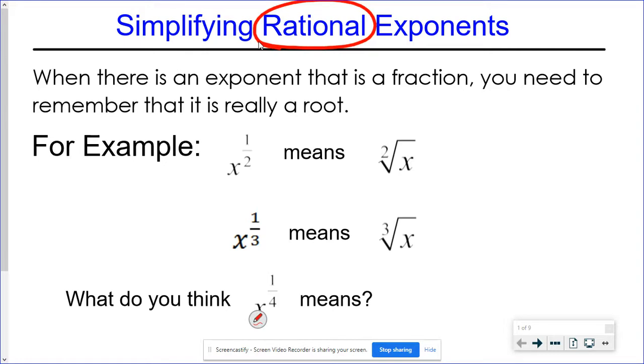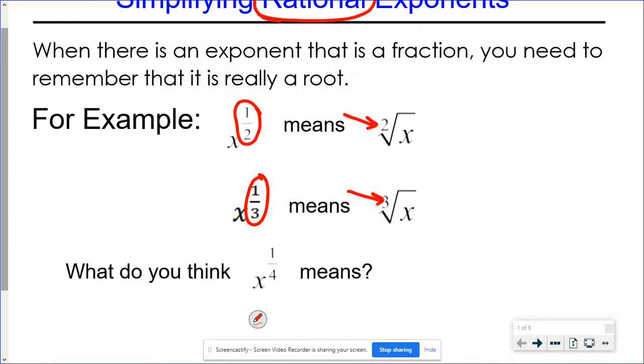For instance, in the first one, I've got x to the one-half power. This one-half power really means that I've got a square root. Typically, we don't see that two in that index spot, but you can. If you're using a calculator on the phone, for instance, when you turn it sideways, you have a scientific calculator. Usually you have that two there. So if I have x to the one-third power, that really means that it's a cube root. So then what would you think x to the one-fourth power means?